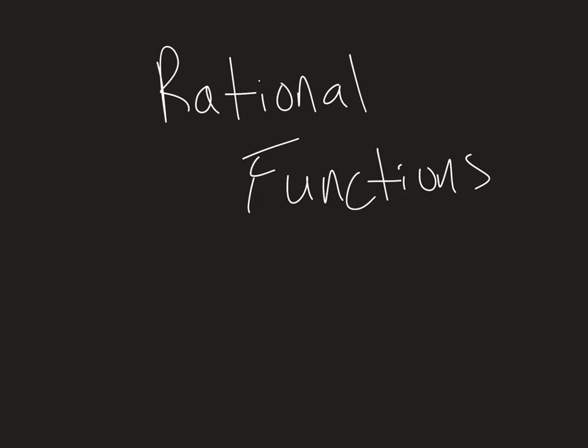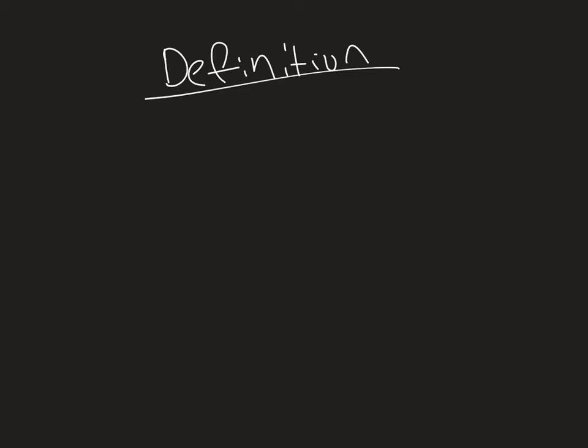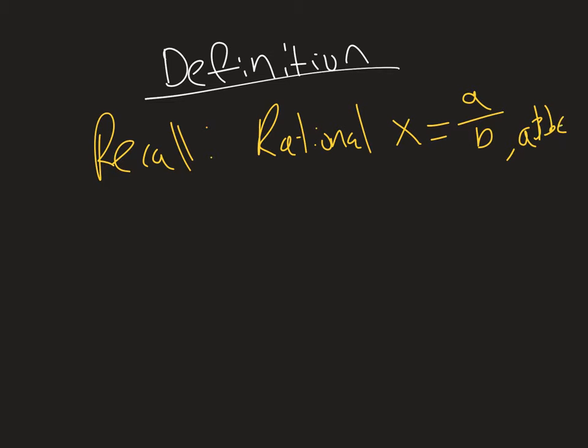In this video we'll talk about rational functions and how to graph them. Let's start with the definition. If we recall, a rational number is rational if it can be written as a fraction, so x equals a over b where a and b are integers, meaning whole numbers or the negatives of whole numbers.